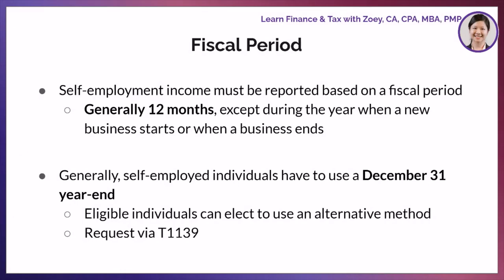Self-employment income must be reported based on a fiscal period. A fiscal period cannot be longer than 12 months. However, it can be shorter than 12 months, such as during the year when a new business starts or when a business ends. Self-employed individuals generally have to use a December 31st year end. If you are an eligible individual, you may be able to submit a request to the CRA to use a different year end.